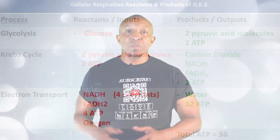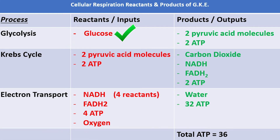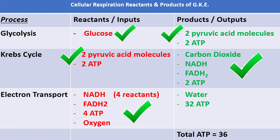Let's complete an overall review of the reactants and products of cellular respiration. The one reactant of glycolysis is glucose; the two products are two pyruvic acid molecules and two ATP. The two reactants of the Krebs cycle are the two pyruvic acid molecules and two ATP from glycolysis; the four products are carbon dioxide, NADH, FADH2, and two ATP. The three reactants of electron transport are NADH, FADH2, and four ATP from glycolysis and the Krebs cycle; the two products are water and 32 ATP. The entire process of cellular respiration produces 36 ATP in all: two ATP from glycolysis, two ATP from the Krebs cycle, and 32 ATP from the electron transport chain.